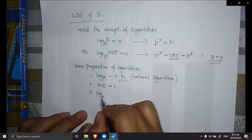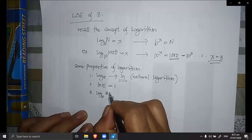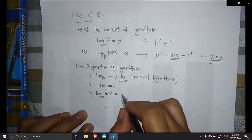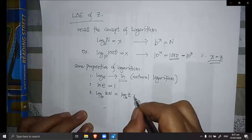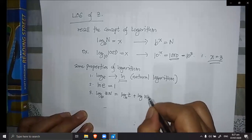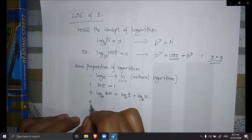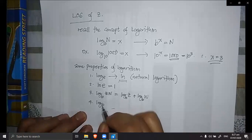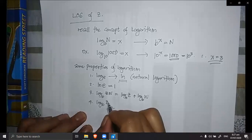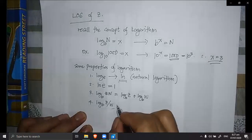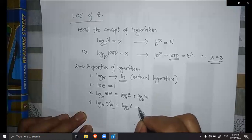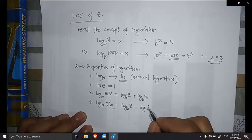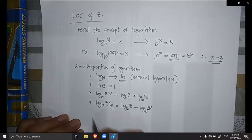For the logarithm of a product: the logarithm of z multiplied by w to the base of b equals the logarithm of z to the base of b plus the logarithm of w to the base of b. For division, the log base b of z over w equals the log of z to the base of b minus the log of w to the base of b — division becomes subtraction.